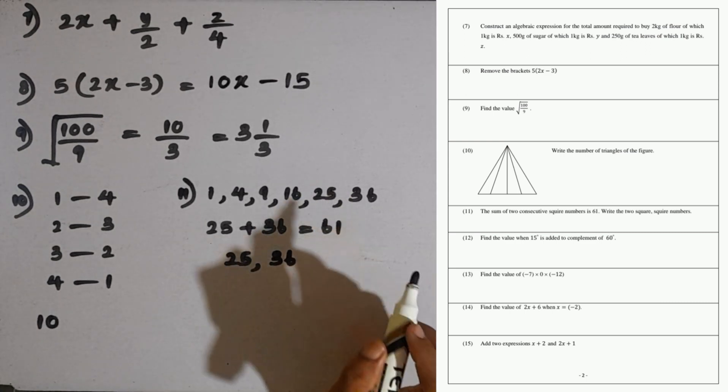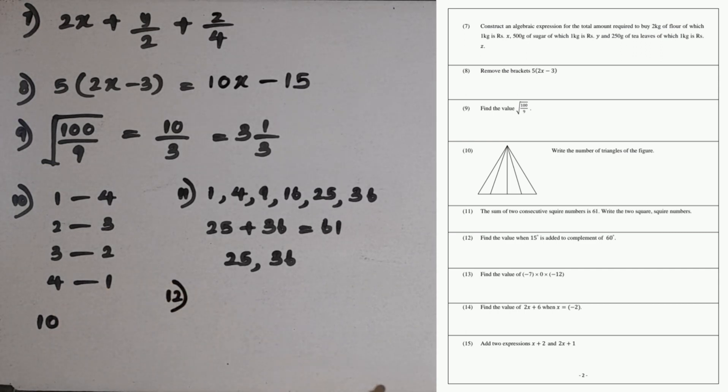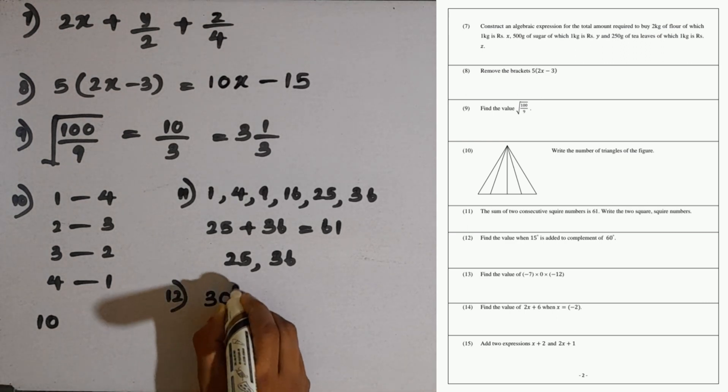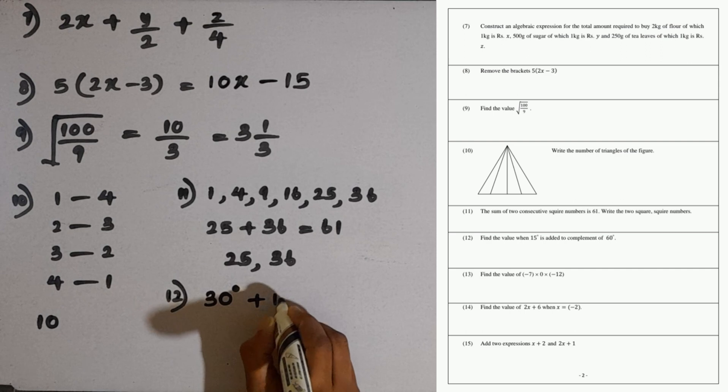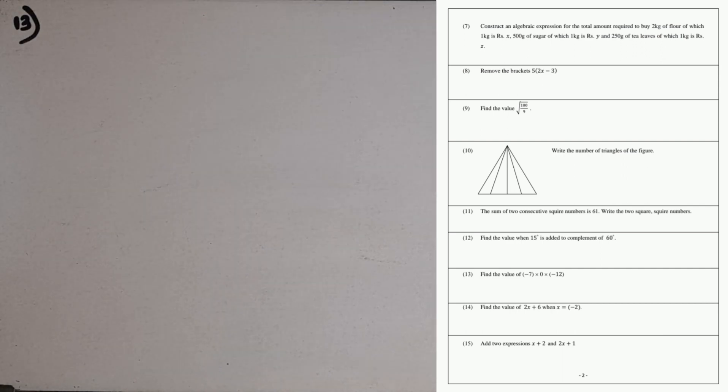Question number 12: find the value when 15 degrees is added to the complement of 60 degrees. What is the complement of 60 degrees? That is 30 degrees. So 30 degrees plus 15 degrees, that is 45 degrees.